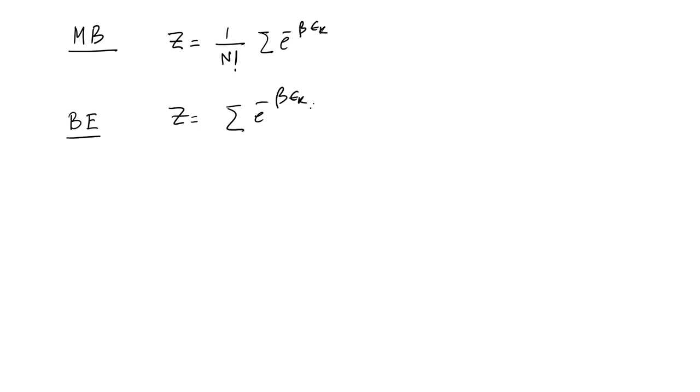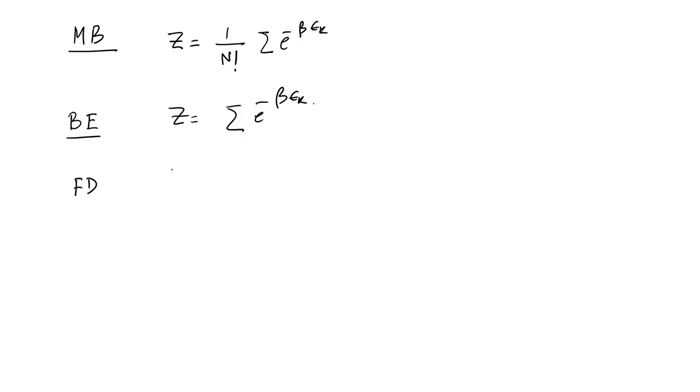In Bose-Einstein statistics, a very large number of particles can occupy one quantum state. For FD statistics, there is no division by N particles either, but the Pauli exclusion principle prohibits two particles from occupying the same quantum state. At most one particle occupies one quantum state, unless spin degeneracy is considered, allowing spin-up and spin-down to share a state.